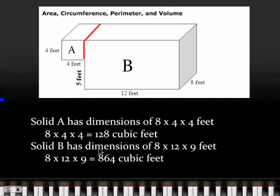Then solid B - it said it had dimensions of eight by twelve by nine. So that would be 864 cubic feet. We just do length times width times height to find the volume of a rectangular solid. I've got the two rectangular solid volumes.